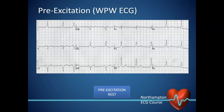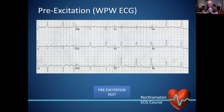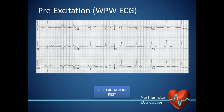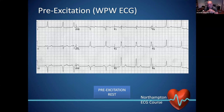Regarding decremental properties in accessory pathways — decremental conduction doesn't happen in accessory pathways, full stop. It's purely an AV nodal function and is designed to work that way. Regarding AV nodal decremental properties in retrograde conduction — yes, it is decremental. So when someone has VT with retrograde P waves, you can get Wenckebach phenomena, two-to-one block, and everything else you can get antegradely — it works exactly the same in retrograde.